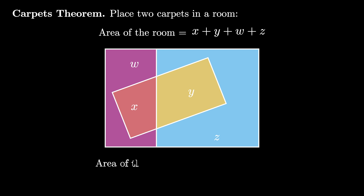From this diagram, we can also compute the area of the carpets. We see that the first carpet covers an area of x plus y, and the second carpet covers an area of z plus y. We have y twice because that's the area of overlap between the two carpets.